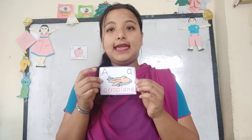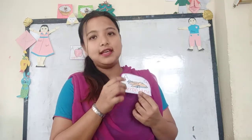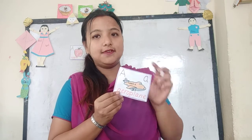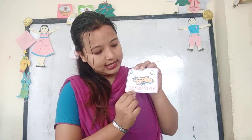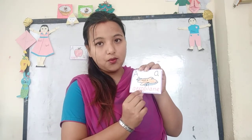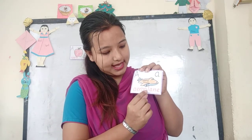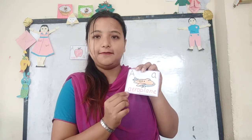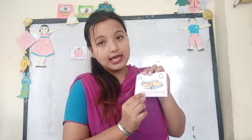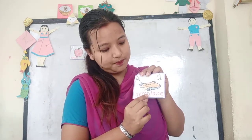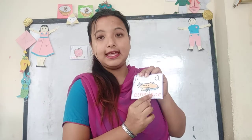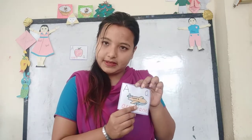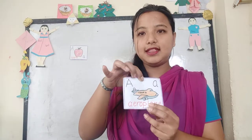A is for Aeroplane. A, E, R, O, P, L, A, N, E — Aeroplane. A, E, R, O, P, L, A, N, E — Aeroplane. A is for Aeroplane.